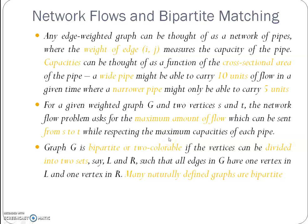So this example is having bipartite or two-colorable if vertices are divided into two sets, that is L and R, such that all edges representing the graph have one vertex in L and one vertex in R. So mainly naturally defined graphs are bipartite. Thank you.